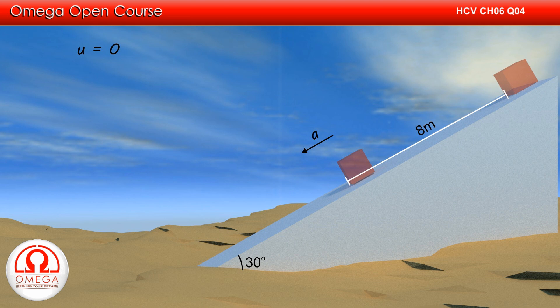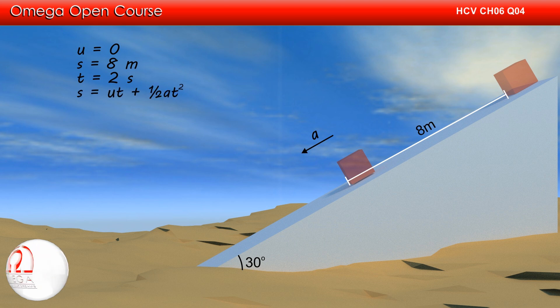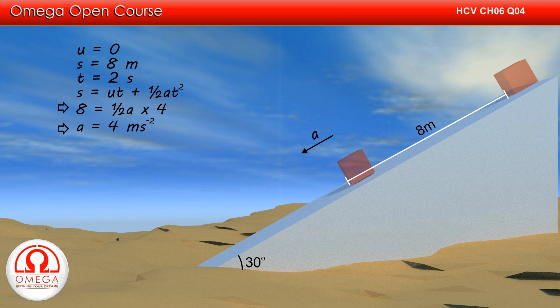The initial speed is zero, displacement is 8 meters, and time taken is 2 seconds. As per Newton's equation of motion, displacement s is given by ut plus half a t squared. Putting the values, we get 8 is equal to half a into 4, or a is equal to 4 meters per second squared.